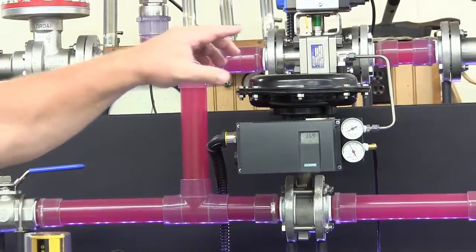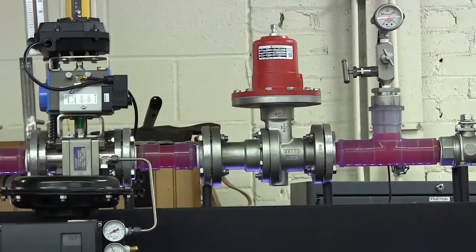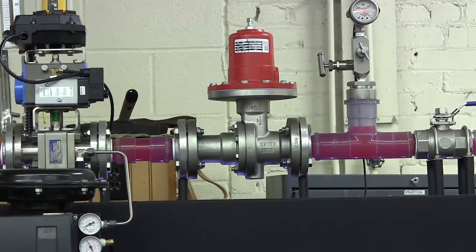Finally, let's look at the mark 60 pressure reducing valve. This valve is designed to regulate downstream pressure, or P2, to a desired set point.